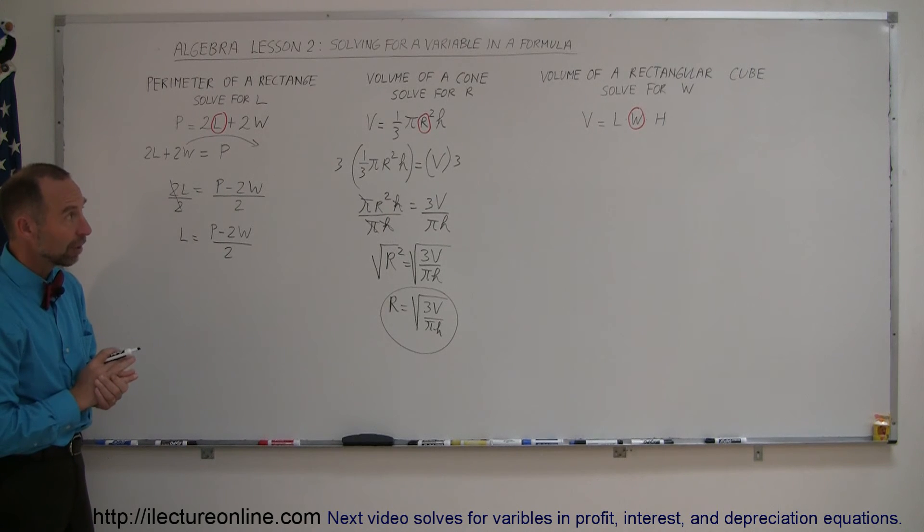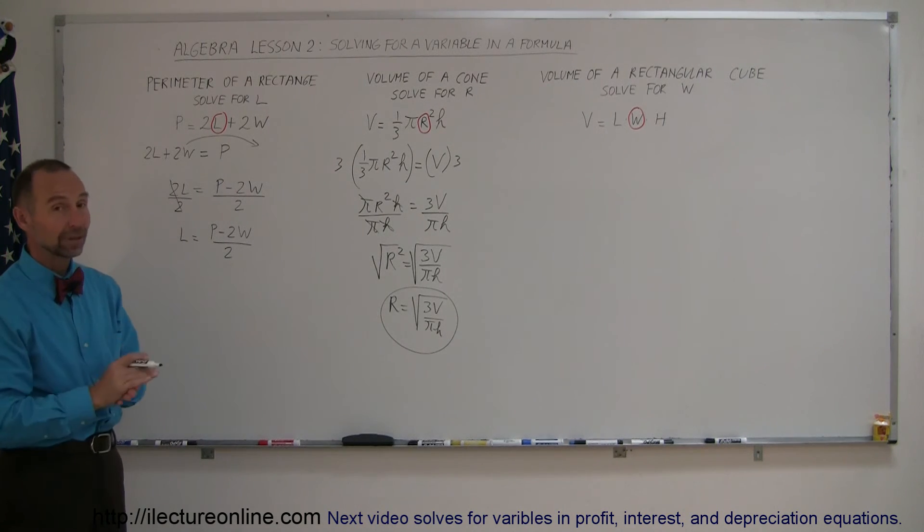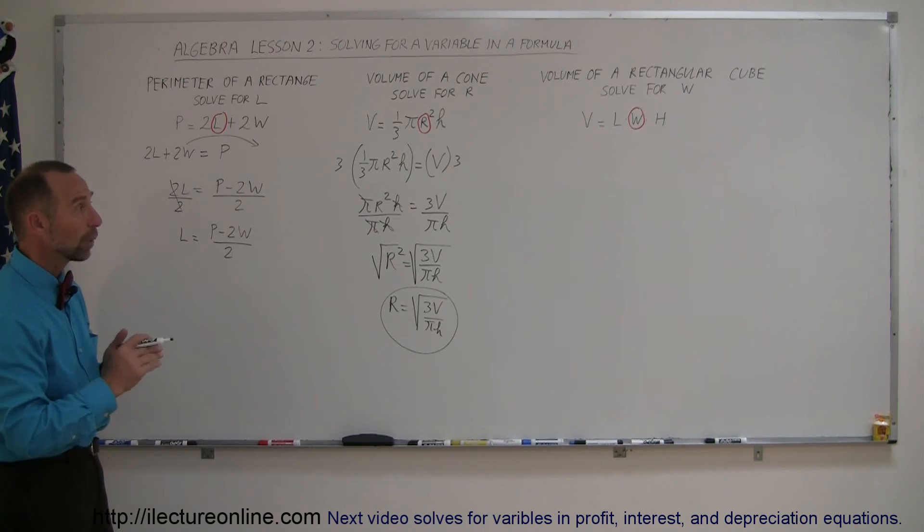Lastly, we have the volume of a rectangular cube. The volume is the length times the width times the height. We want to solve for the width.